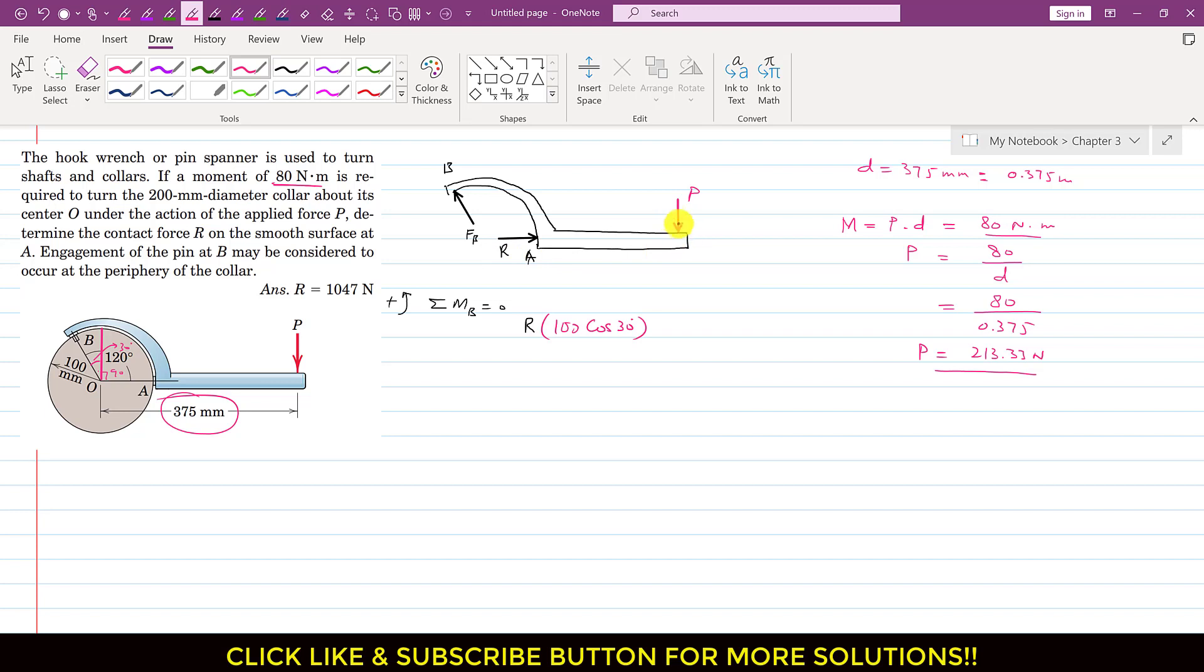And similarly, this P is producing the clockwise moment about point B. So we will write minus P, and P is now known which is 213.33. And the perpendicular distance of this P from point B is 375 plus this distance. Plus this distance. So this 375, so I will multiply this with 375 plus this. So this is the sine component of this radius. So this is 100 sine of 30 degrees. So I will add 100 sine of 30 degrees and this will equal 0.